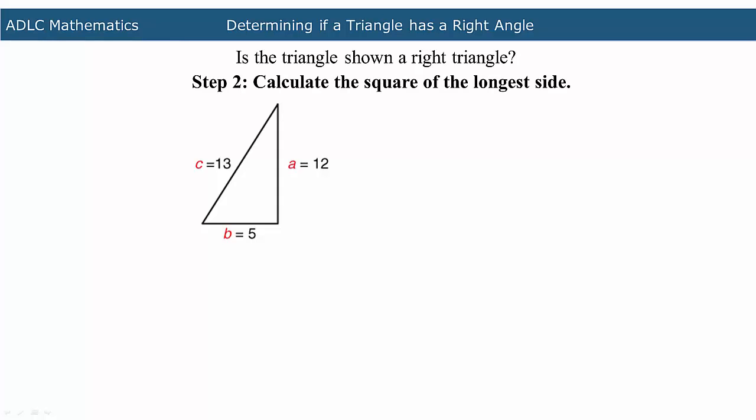Now calculate the square of the longest side. The longest side, C, is 13 units long. C squared equals 13 squared. So C squared equals 169 units squared.